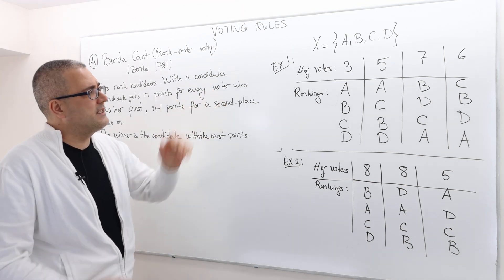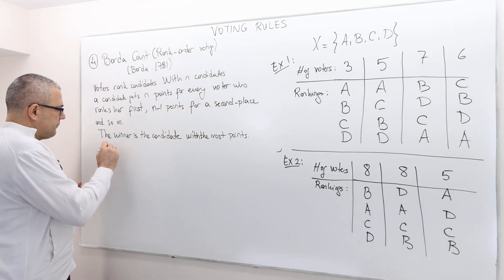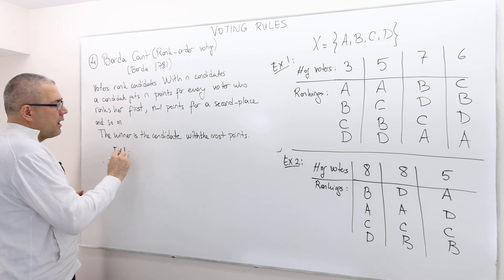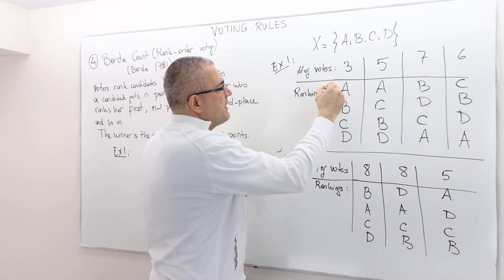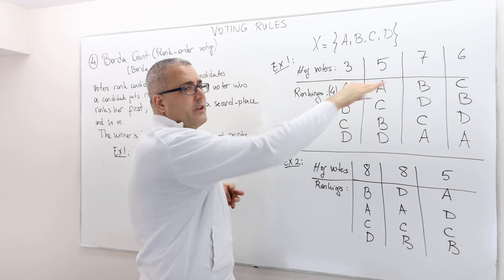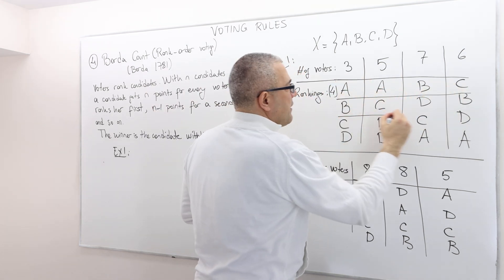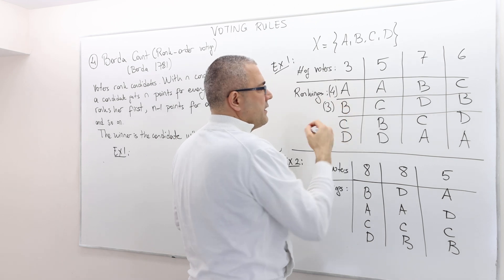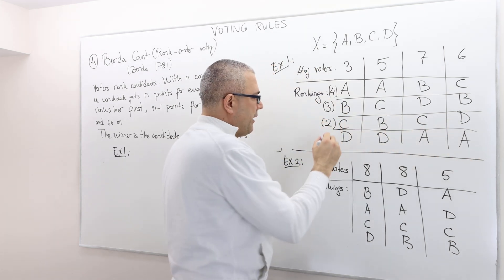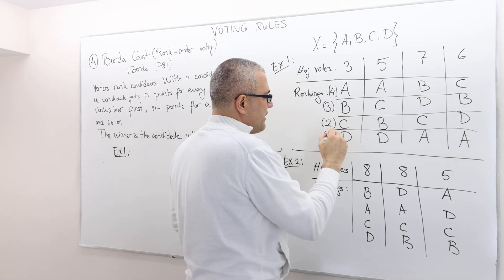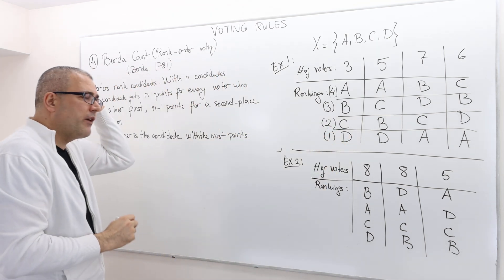So in our example one, we have four candidates. We basically give four points to the first best, three points for the second best, two points for the third best, and the last candidate gets only one point.